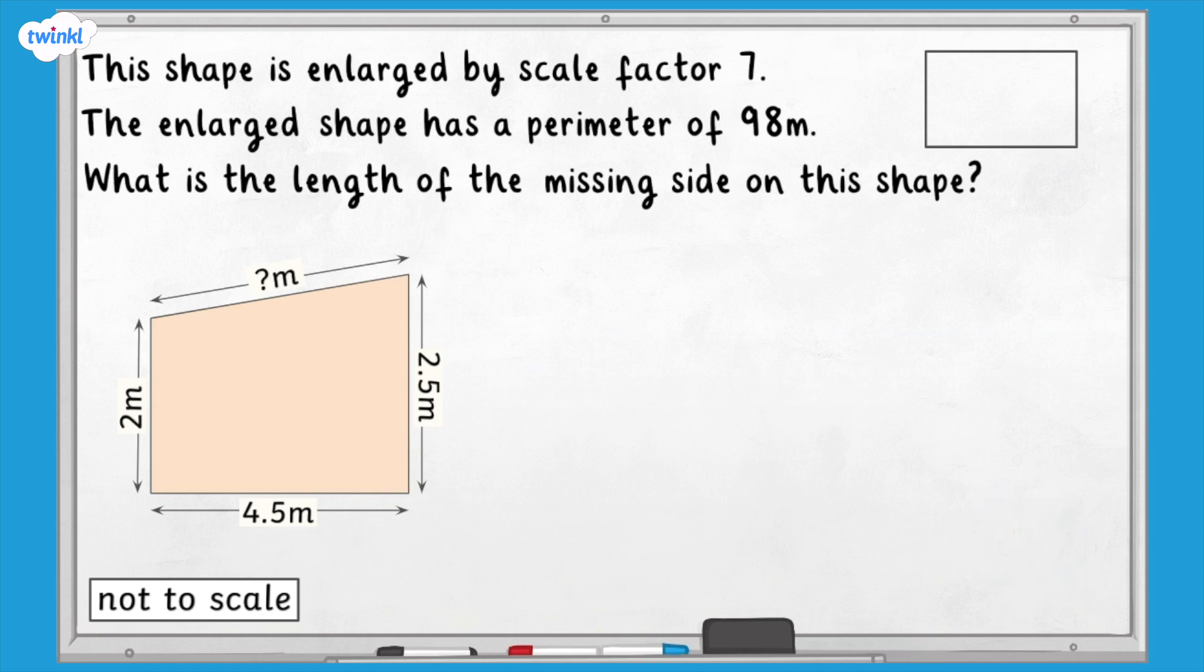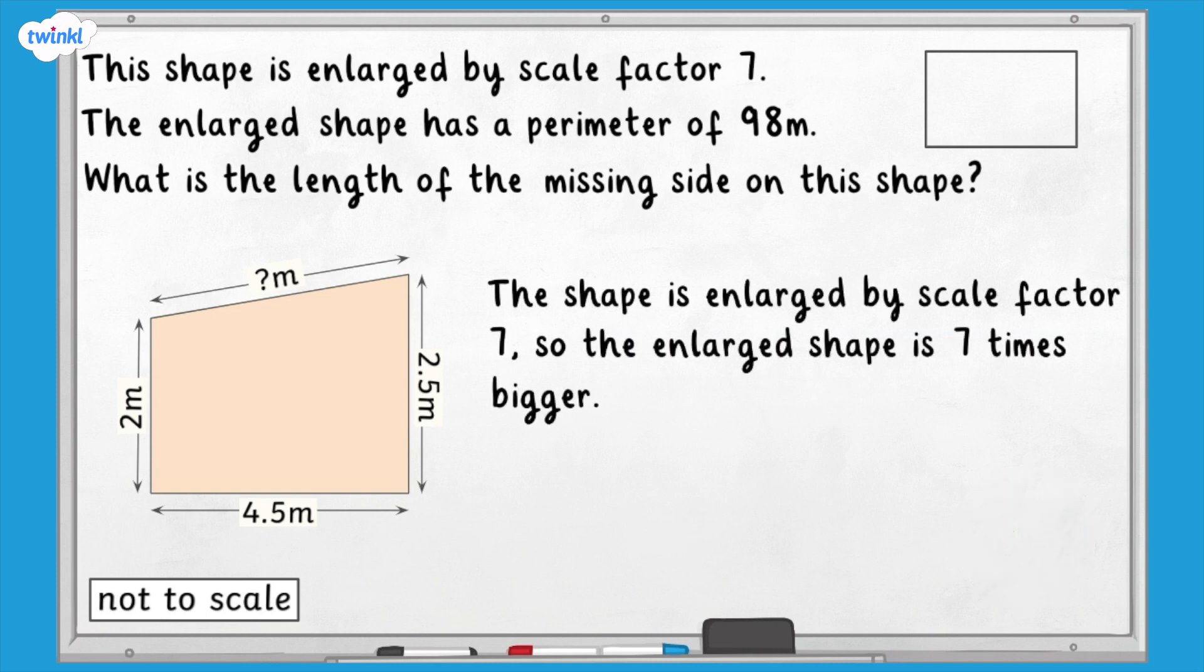How did you do? The shape is enlarged by scale factor 7, so the enlarged shape is 7 times bigger. If the perimeter of the enlarged shape is 98 meters, the perimeter of the original shape is 7 times smaller. 98 divided by 7 equals 14, so the perimeter of the original shape is 14 meters. The sides we have been given add up to 9 meters, so the missing side must be 14 subtract 9, which equals 5. The length of the missing side is 5 meters.